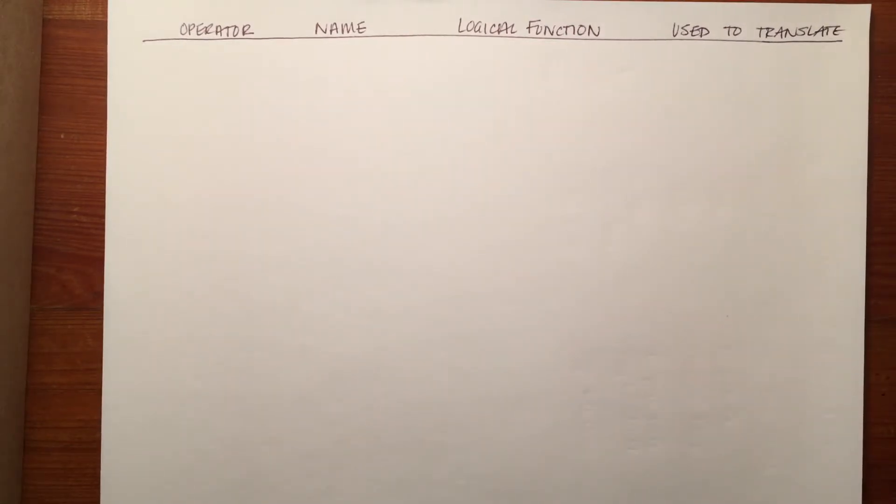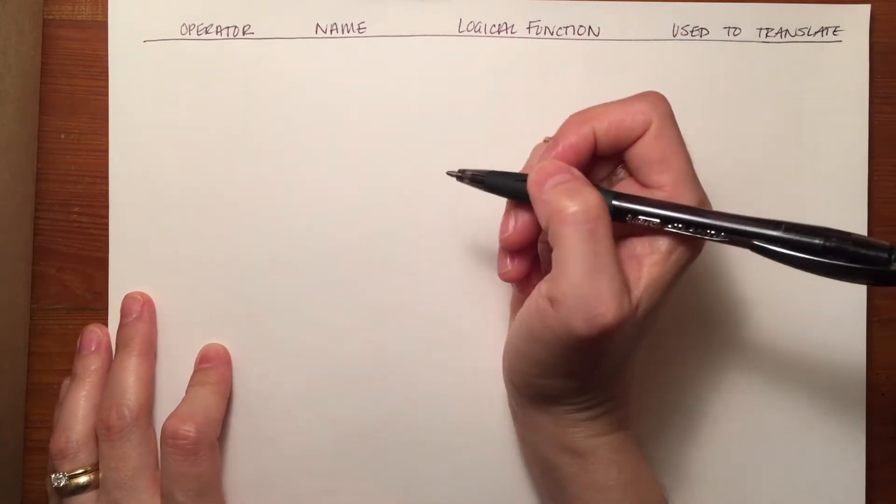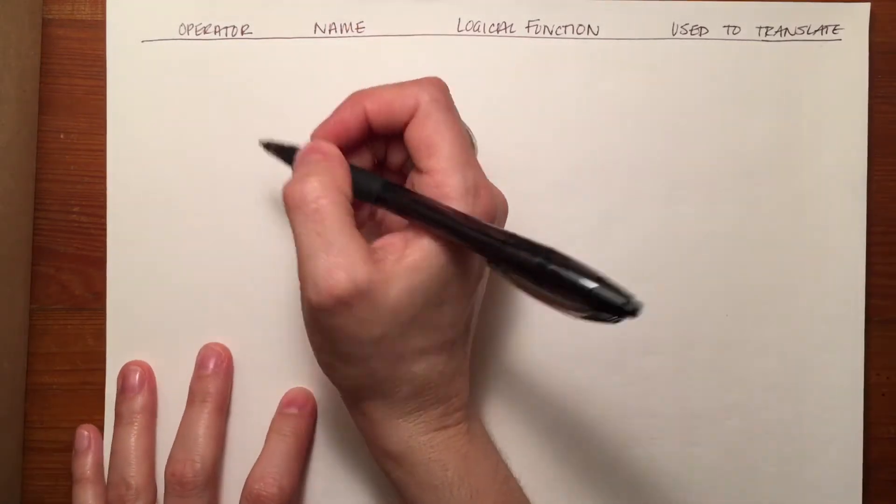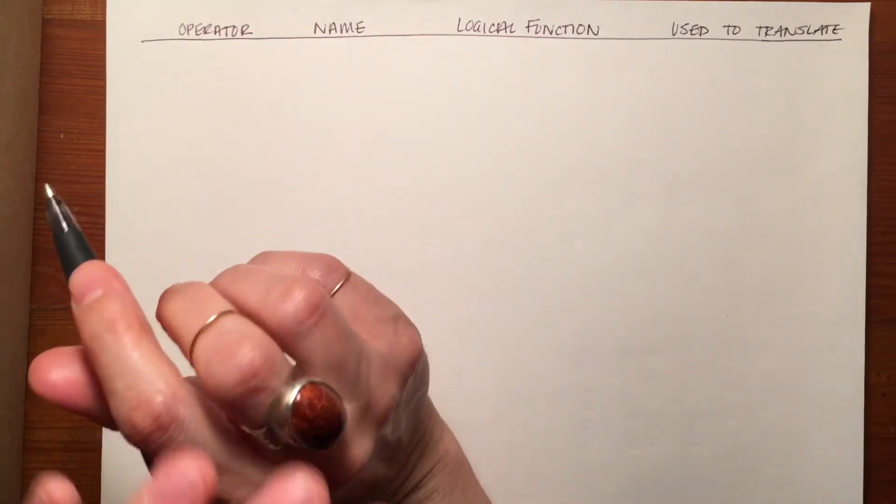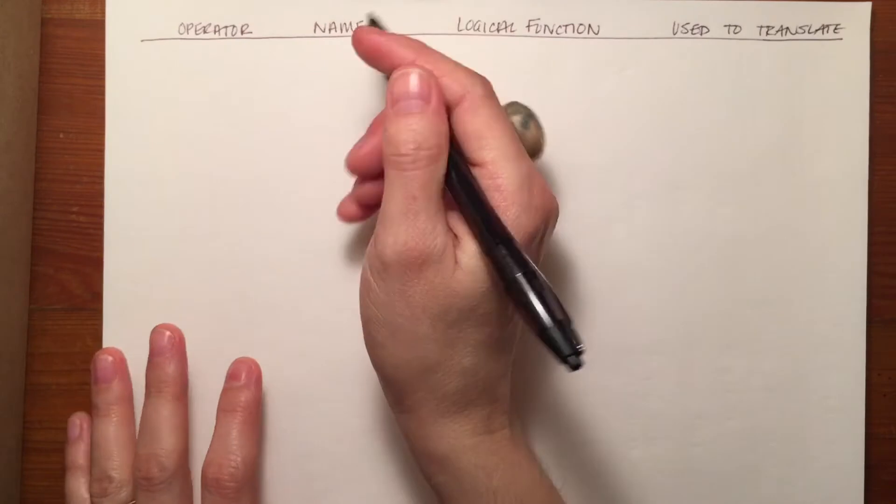The list of things that they're used to translate is not an exhaustive list. That's why I say a shorthand list. So just to introduce you to the operators or symbols of propositional logic.